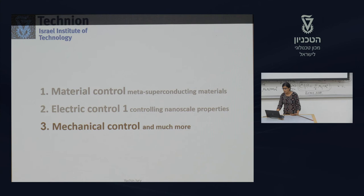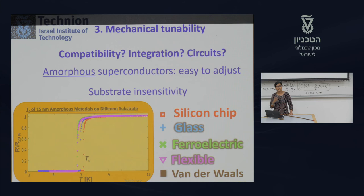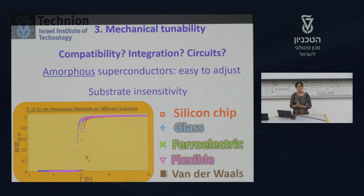The next approach is mechanical tuning. We introduce a new material, apply current, and tune by mechanical means. We fabricate the SQUID on different substrates — successfully on silicon chips, glass, ferroelectric materials, and flexible materials — and explore what happens when we flex the device.